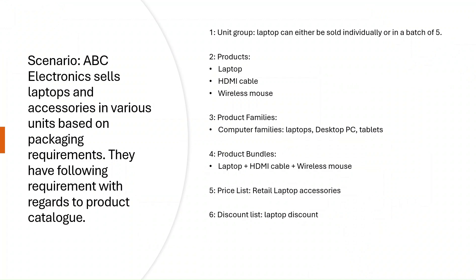Let's consider this scenario. There is a company, ABC Electronics, that sells laptops and accessories in various units based on packaging requirements. They have the following requirements: laptops can either be sold individually or in a batch of five. They have three different products — laptops, HDMI cable, and wireless mouse. They have a product family called Computer Families which includes laptops, desktop PCs, and tablets. They also have product bundles which include laptop plus HDMI cable and wireless mouse. They have a price list named Retail Laptop Accessories and a discount list called Laptop Discounts.